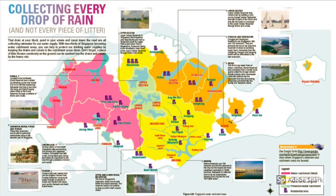Due to Singapore's equatorial climate, we actually receive enough annual rainfall to cover our needs — there is more rain than the total amount used. Technically, we should not face water shortage from rainfall alone. However, land is at a premium in Singapore. Two main issues arise: a lot of rainwater runs off concrete surfaces and isn't captured, and there is insufficient space to store all the water collected.